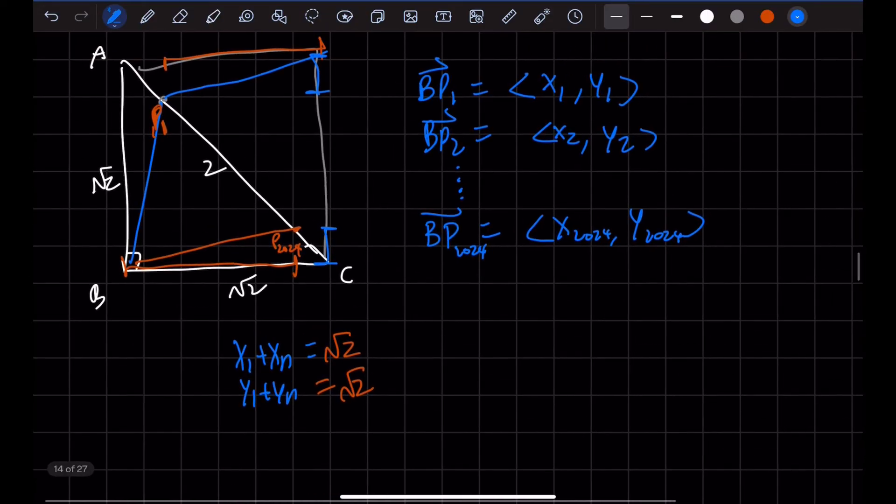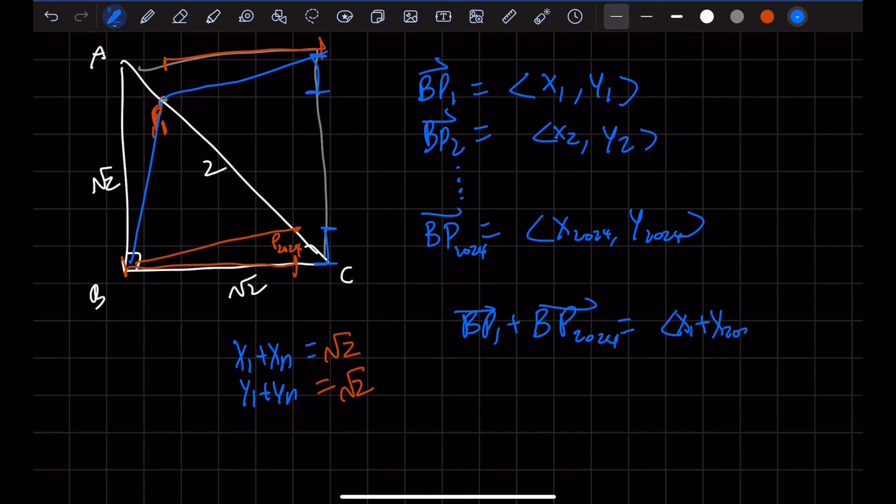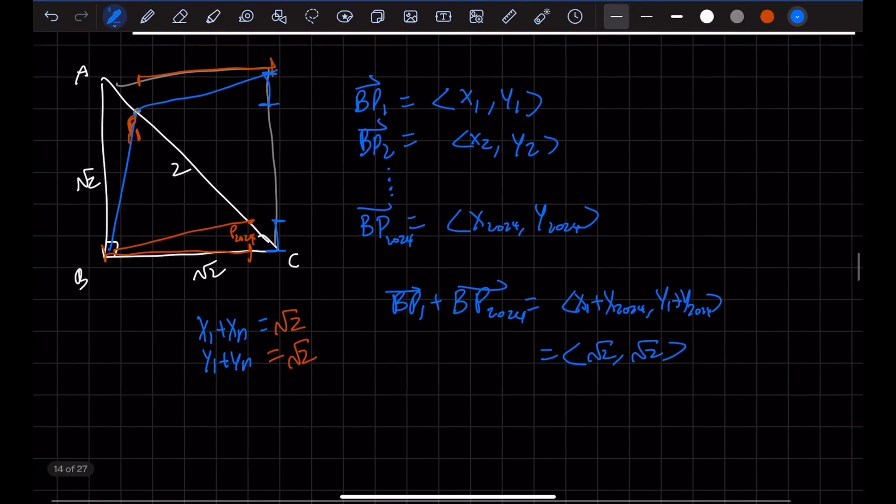So we see that by symmetry, BP₁ + BP₂₀₂₄ will be ⟨X₁ + X₂₀₂₄, Y₁ + Y₂₀₂₄⟩. And this will be equal to ⟨√2, √2⟩. That's a really cool property.